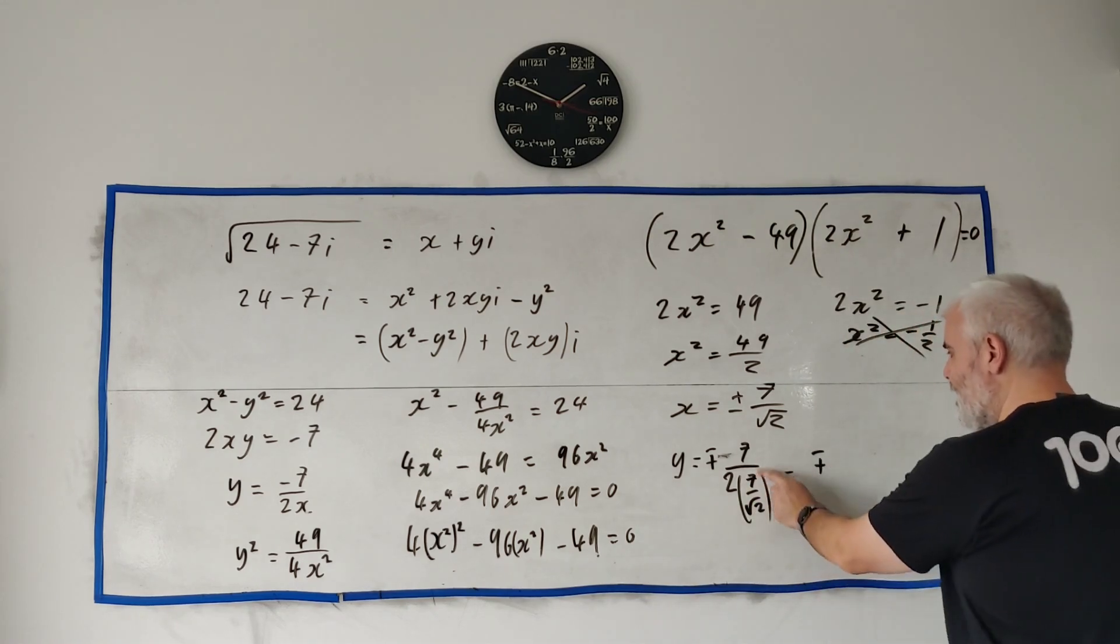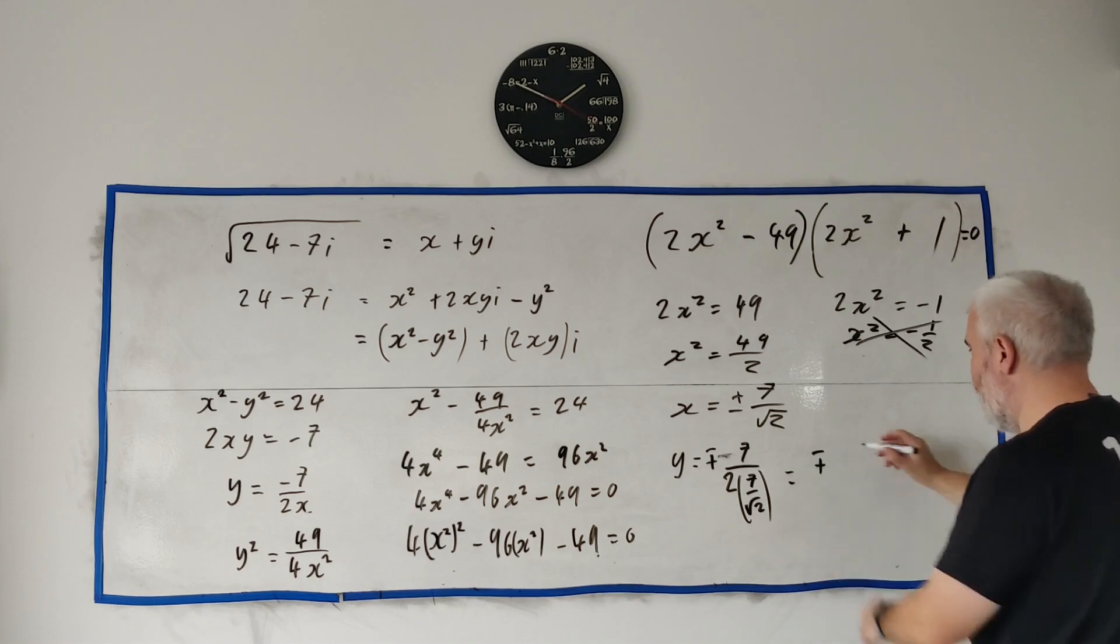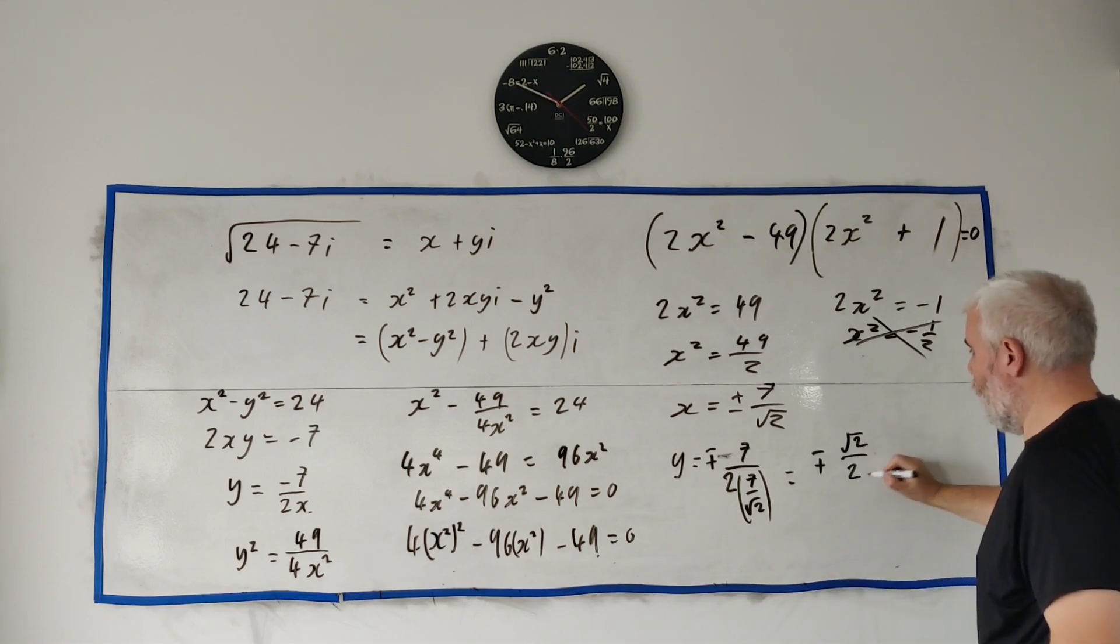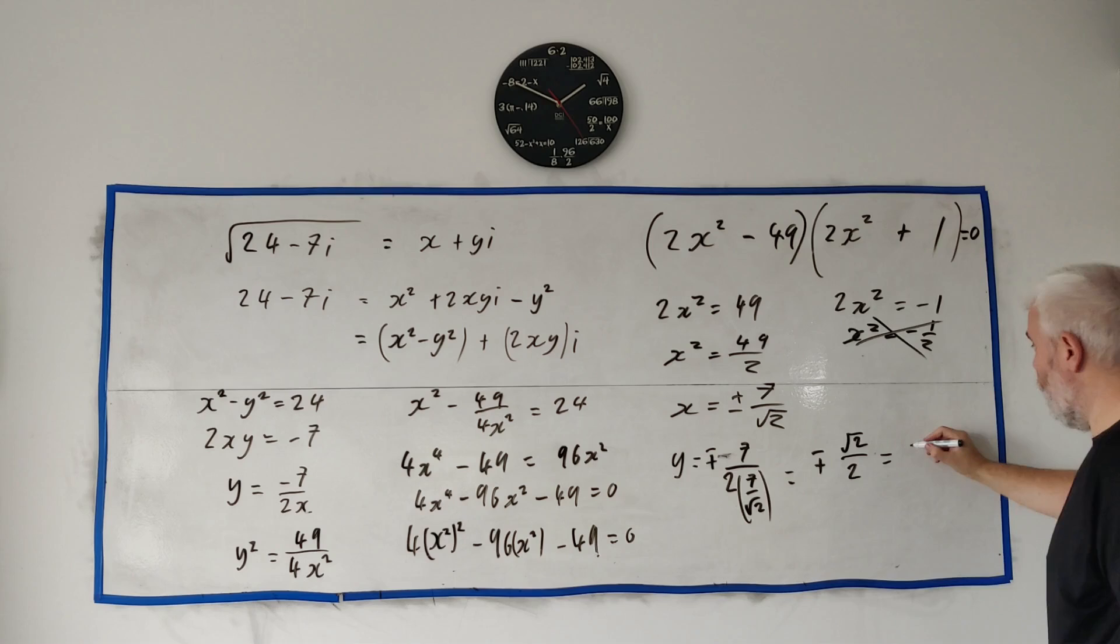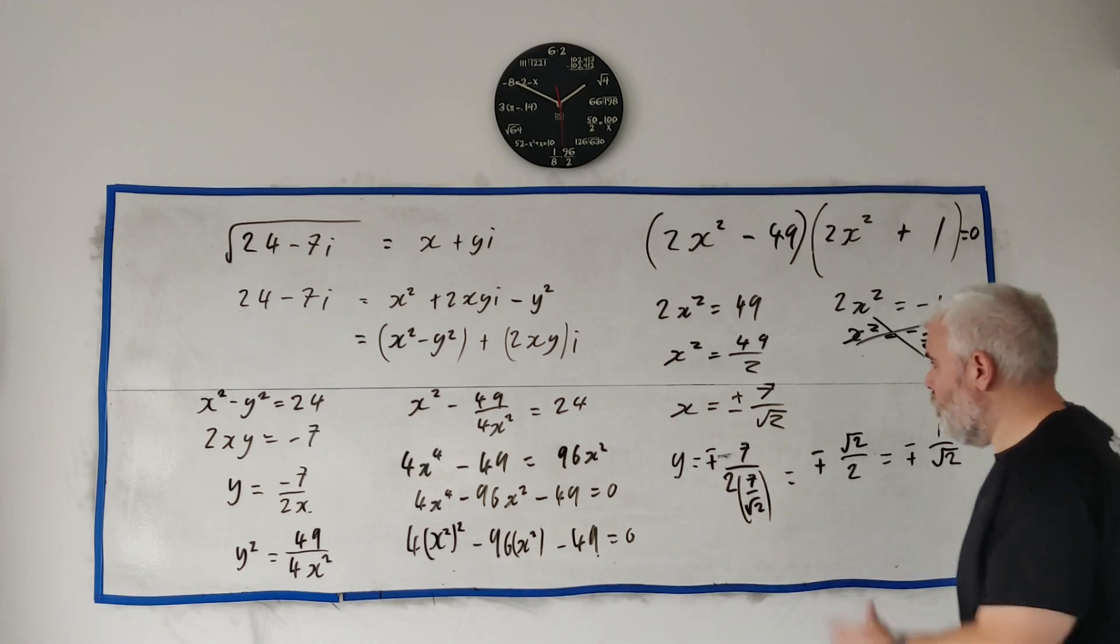Clean all this up, we get minus plus, the sevens cancel, and we get square root of 2 over 2. Or you could write that—you could leave it as this or write that as 1 over the square root of 2.